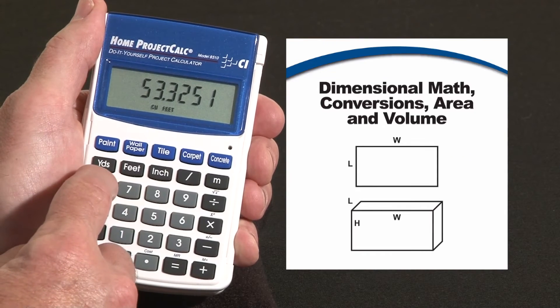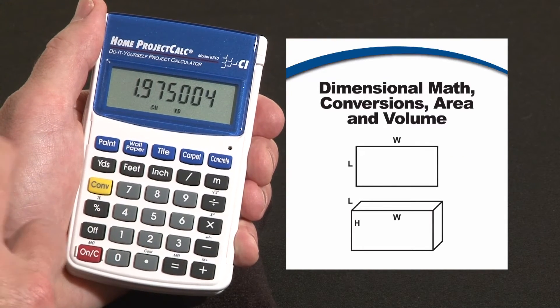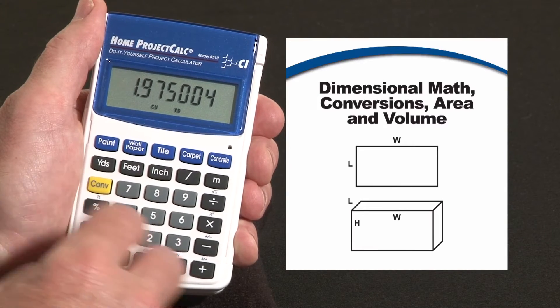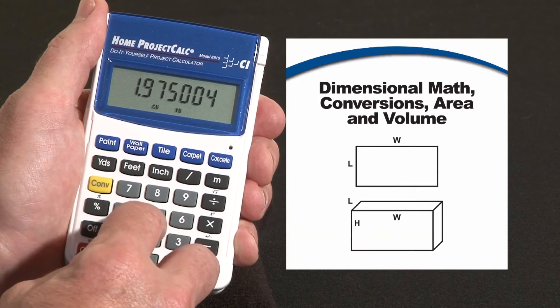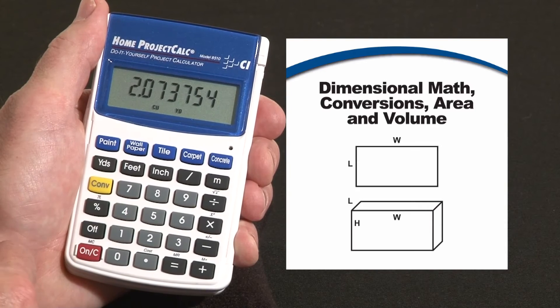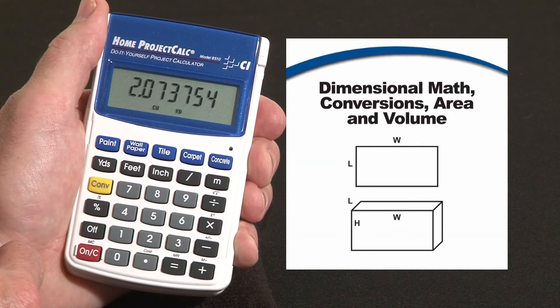For concrete, you would want to change that to yards, cubic yards. 1.975, you could say, well I want to add plus say five percent for waste, and I need basically two cubic yards for that particular job.